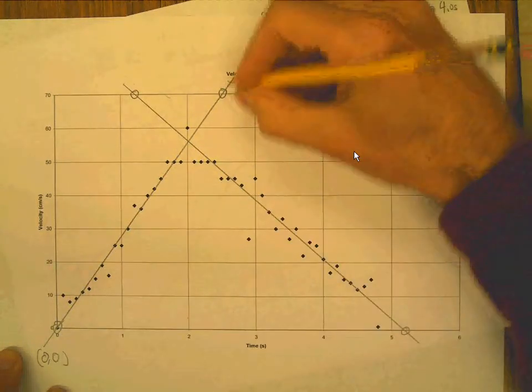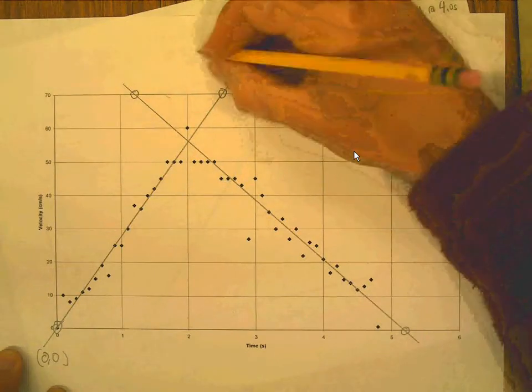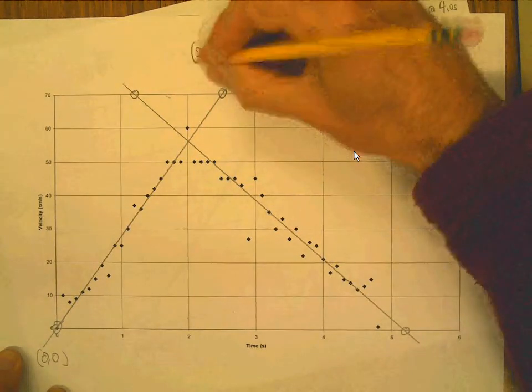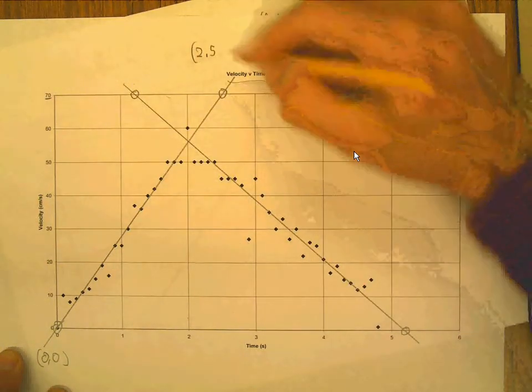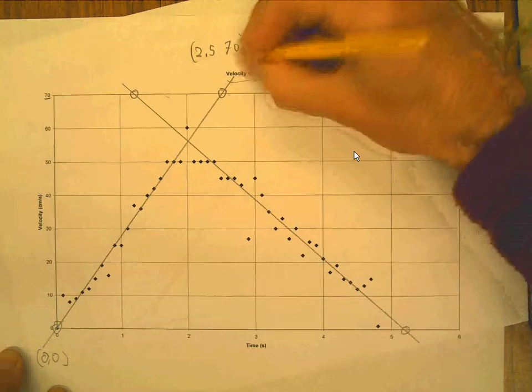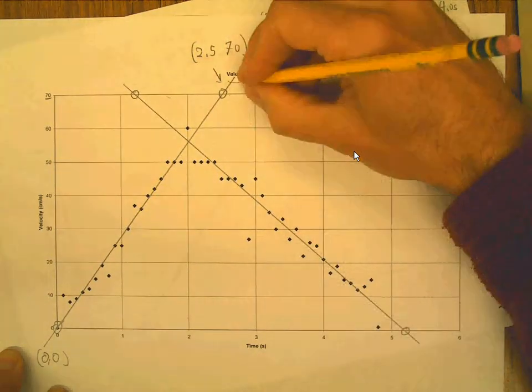This point here is over, I think it's over 2.5, right? And then it's up 70, right? So all the way up here at the top, right? Right, so this line here, I'm going to call this A.